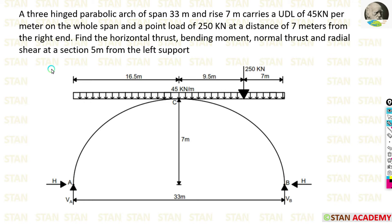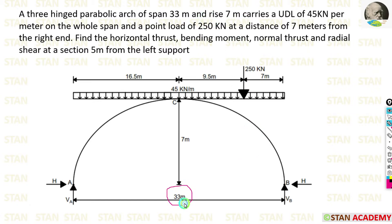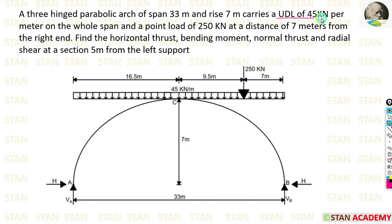Hello everyone, today we are going to see one problem based on a three-hinged parabolic arch. The arch has a span of 33 meters and a rise of 7 meters. Using these dimensions we can draw the arch. It carries a UDL of 45 kilonewton per meter on the whole span, as shown.